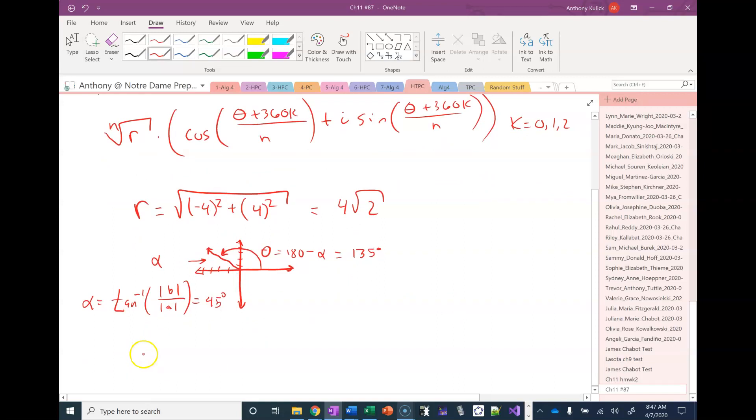So I'm going to have the cube root of 4 square root 2 times the cosine of 45 plus 0 over 3 plus i sine 45 plus 0 over 3. So this is when k equals 0.